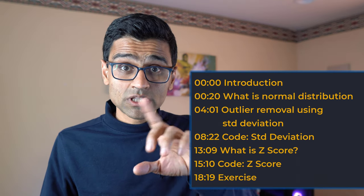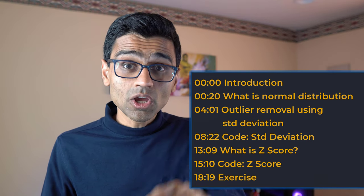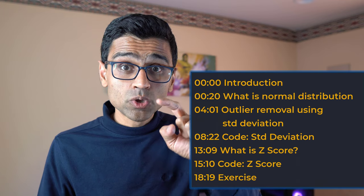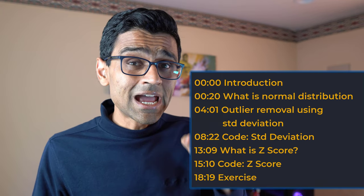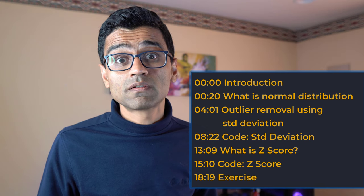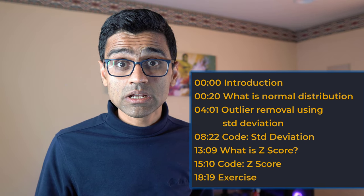In this video we will try to understand what is normal distribution or Gaussian distribution — these two are terms for the same thing. We'll also understand what is z-score and we'll do some Python coding to understand how exactly these concepts are used in the field of data science and machine learning.